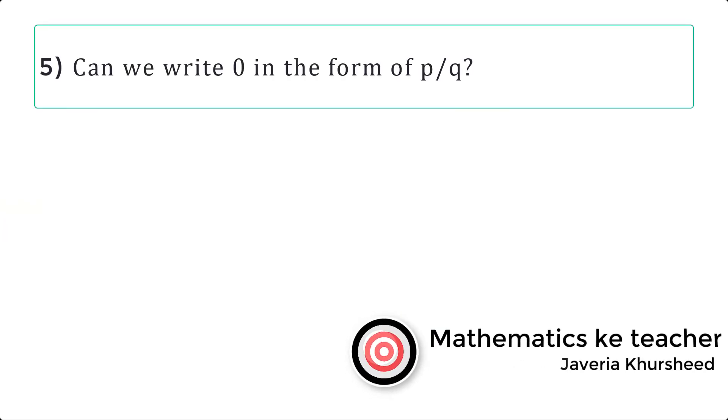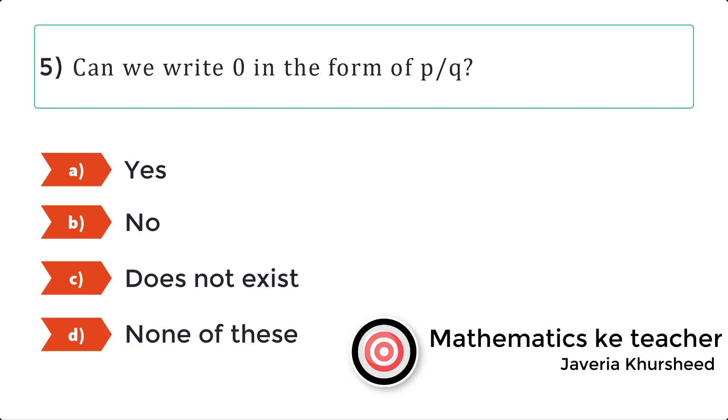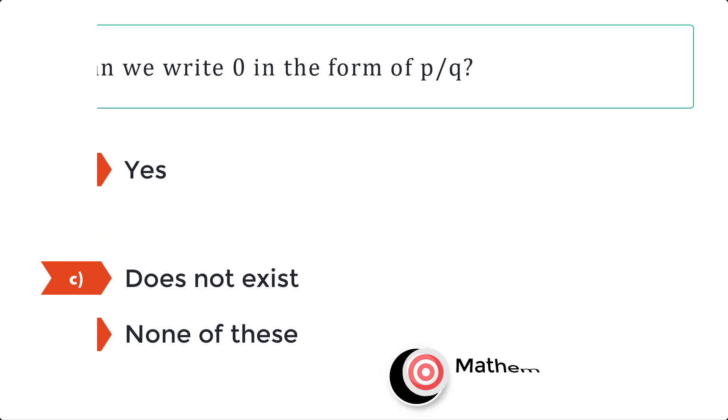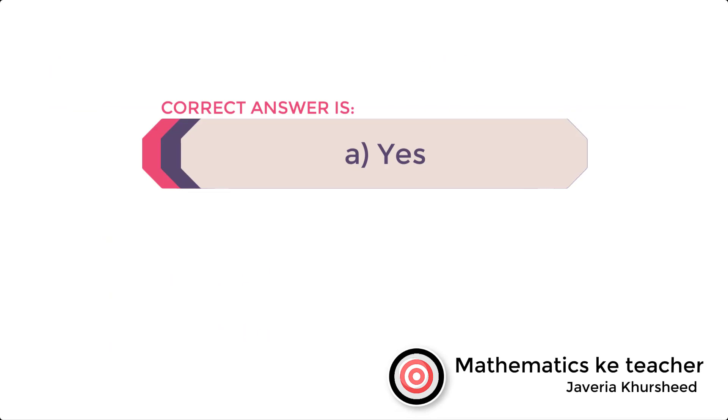Question 5: Can we write zero in the form of P by Q? A: yes, B: no, C: does not exist, D: none of these. Correct answer is A, yes.